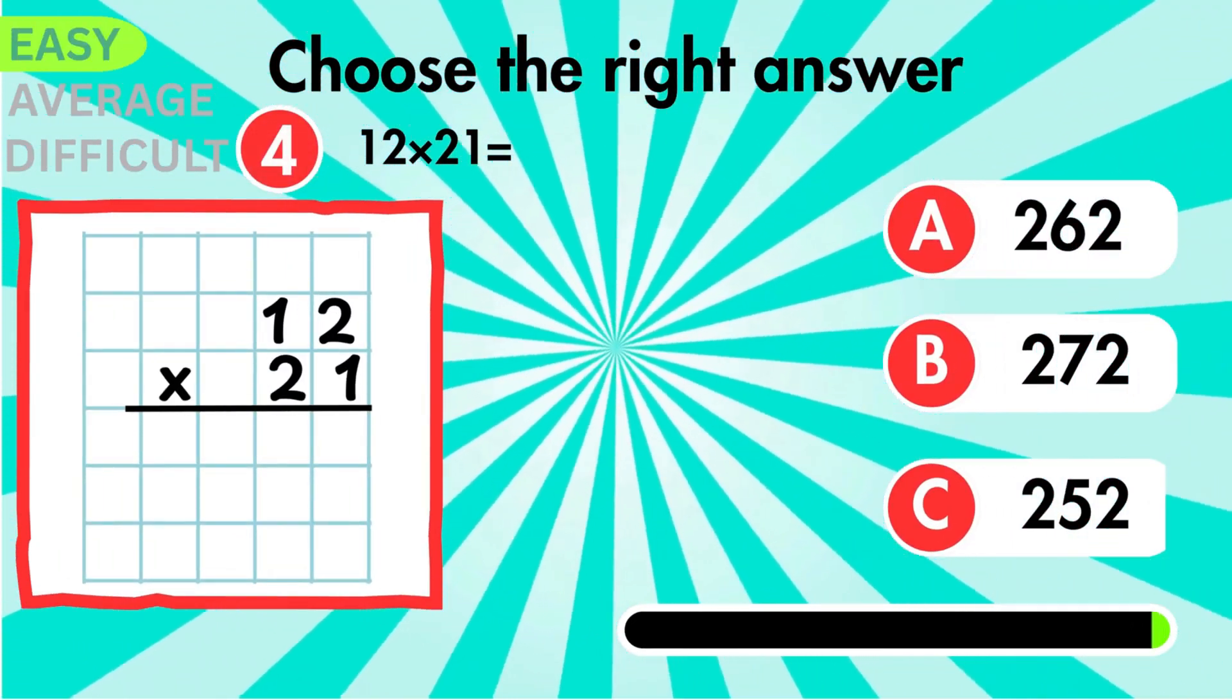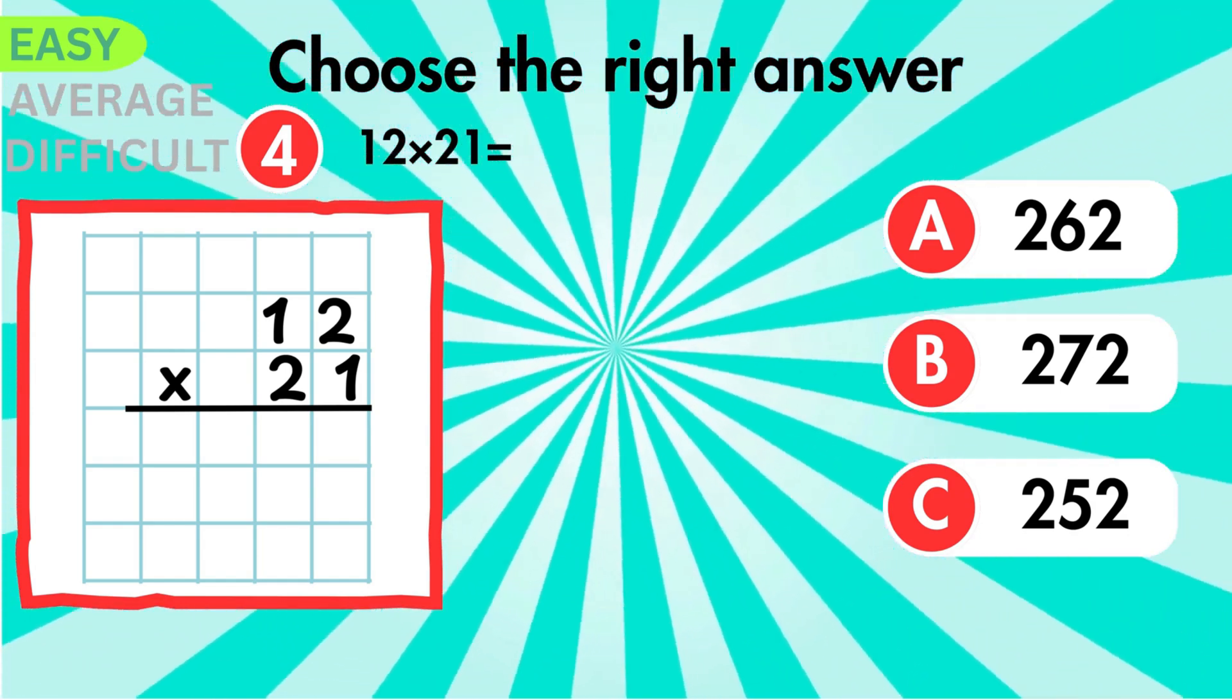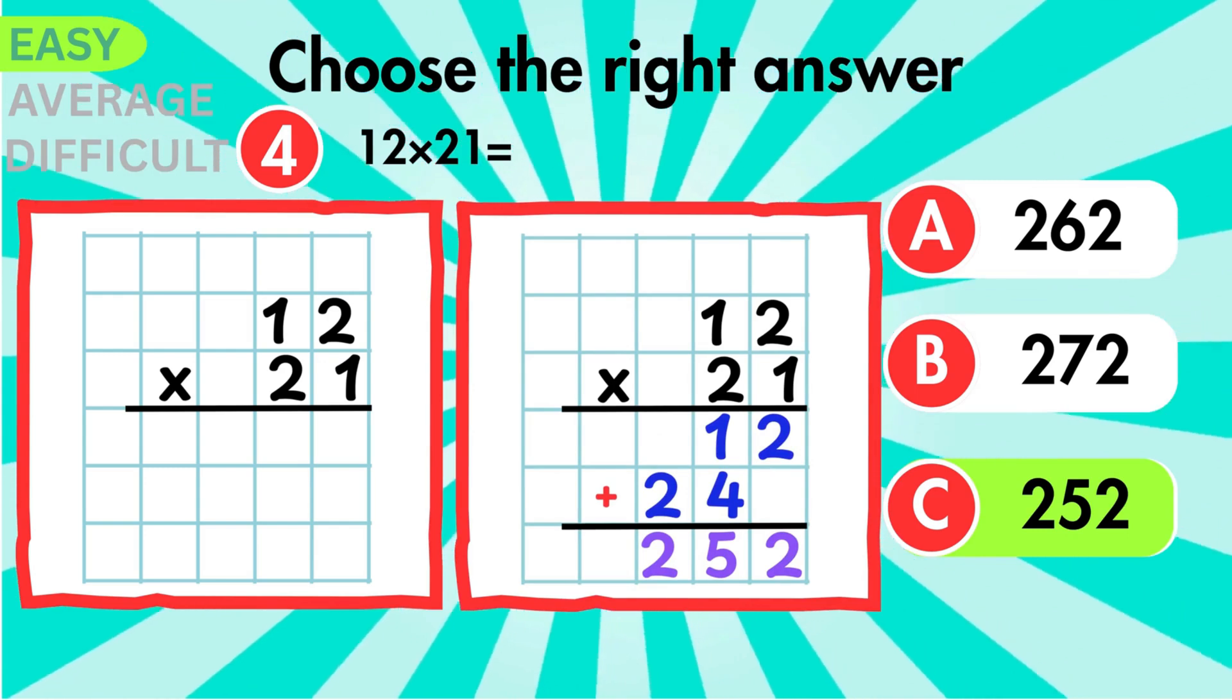Let's do 12 multiplied by 21. Remember the easy steps for this one. The answer is 252.